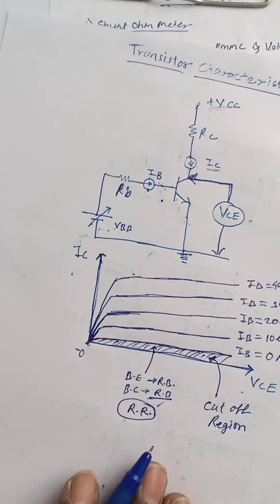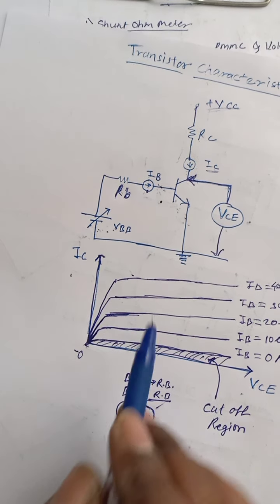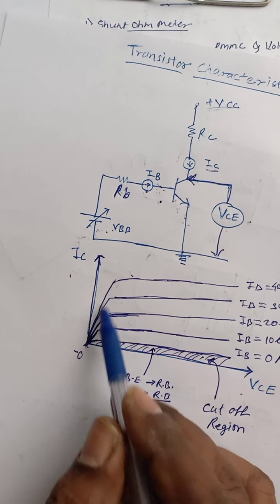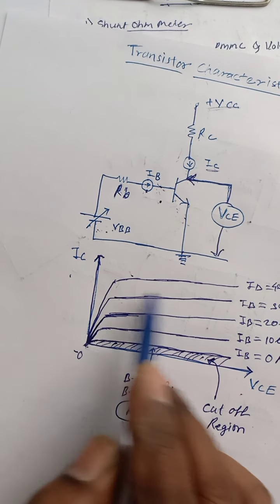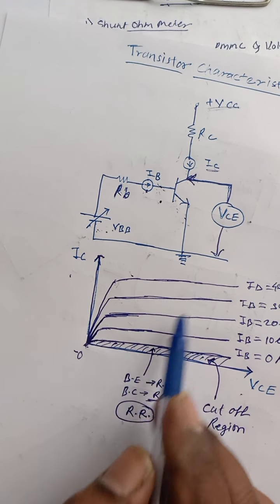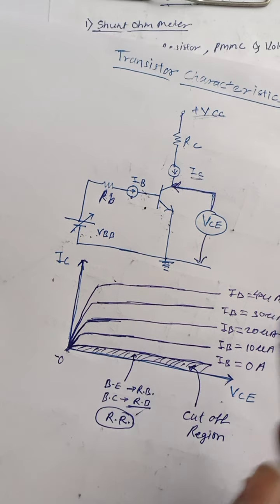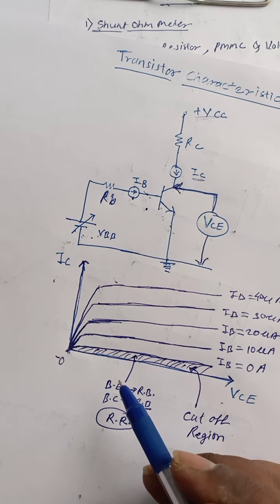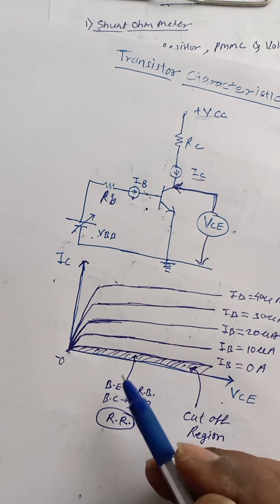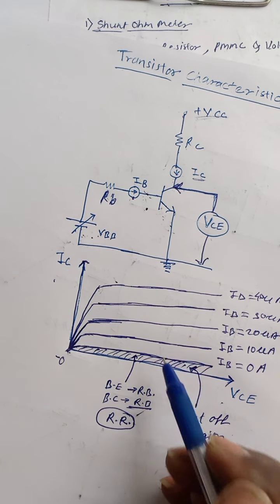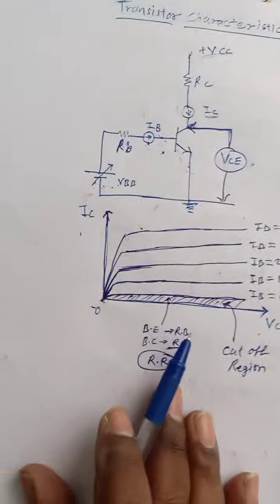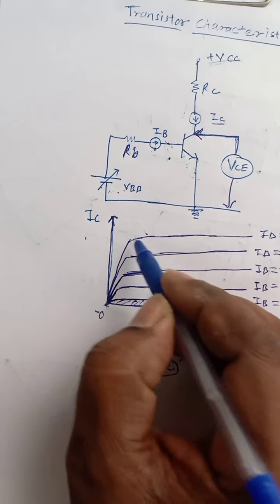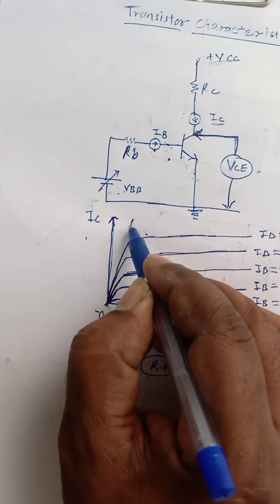Similarly, as we increase the base voltage we get the same characteristic curves but the magnitude of current is a little bit increased. Collector current increases a little with increase in IB. This is nothing but the characteristic curves of a transistor — only the current magnitude increases.